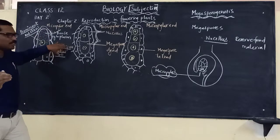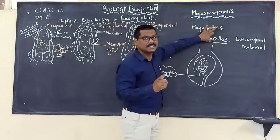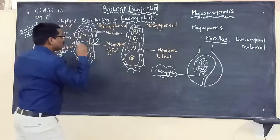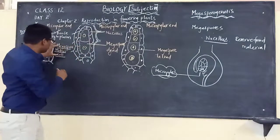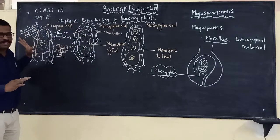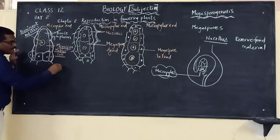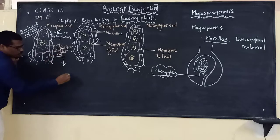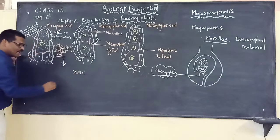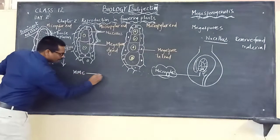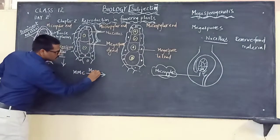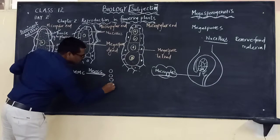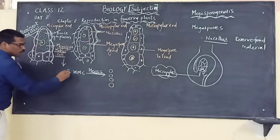The megaspore mother cell is one of the nucellus cells present towards the micropylar region of the ovule. The process of formation of megaspores from the megaspore mother cell is called megasporogenesis. In short, we call it MMC. This megaspore mother cell will undergo meiosis.